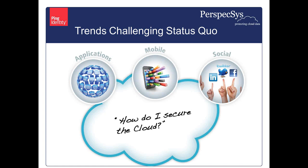Thank you very much. I'm going to focus on what it means to control access, as opposed to controlling or protecting data, which Jerry will follow up with. There are a number of trends challenging the status quo around how we secure the cloud. From an identity and access standpoint, it's not just about the apps and the data, but also about mobile access — especially when you can go direct from client to cloud — as well as social, because social identities are cloud identities that factor into cloud access considerations.